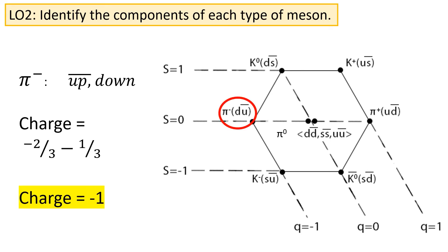Let's take an example. Pi minus has a constituent anti-up, down. If we think about the charge, that gives it a charge of minus two-thirds, minus a third, for an overall charge of minus one. The charge of these mesons is always shown as a superscript next to the particle.